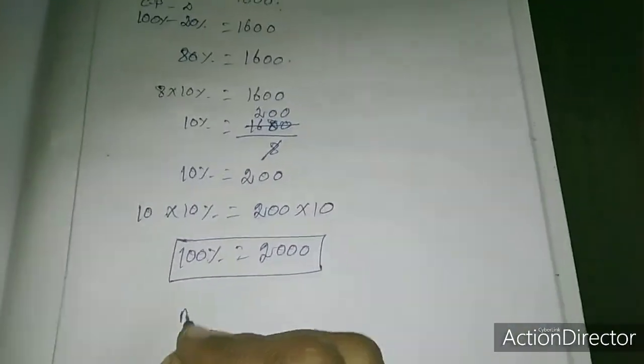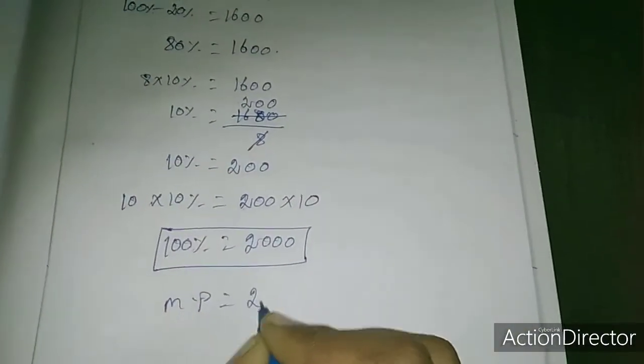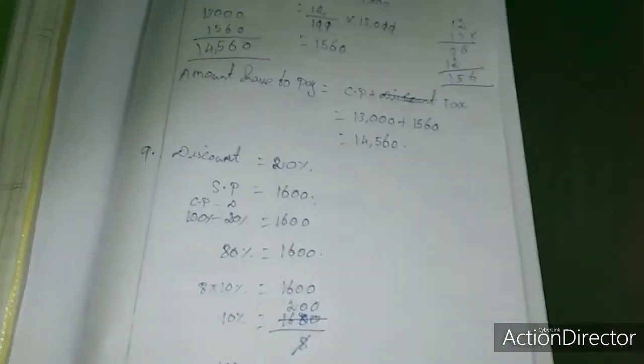So 10% equals 200, therefore 100% amount, which is the market price, equals 2,000. This is the answer for problem 9.